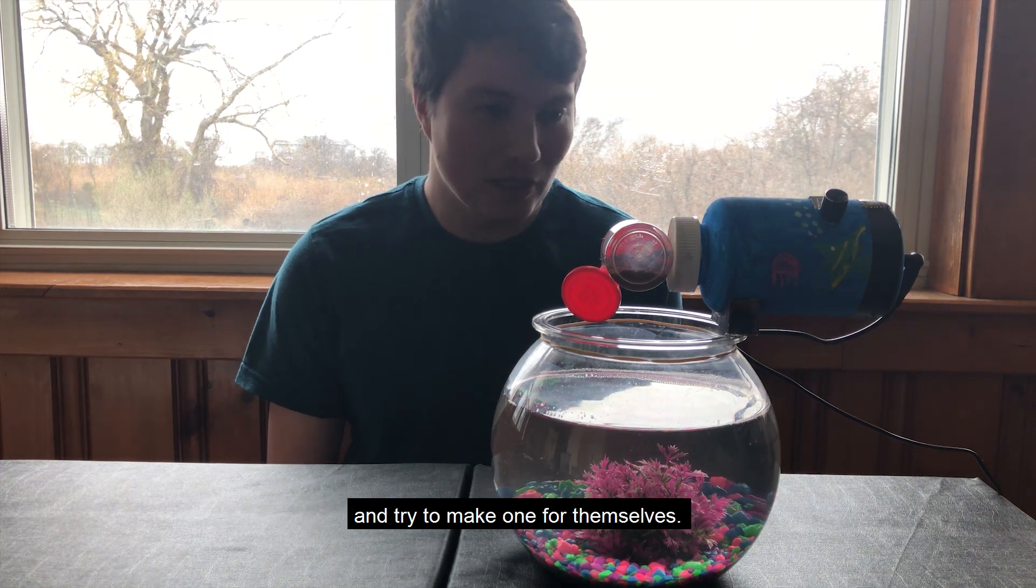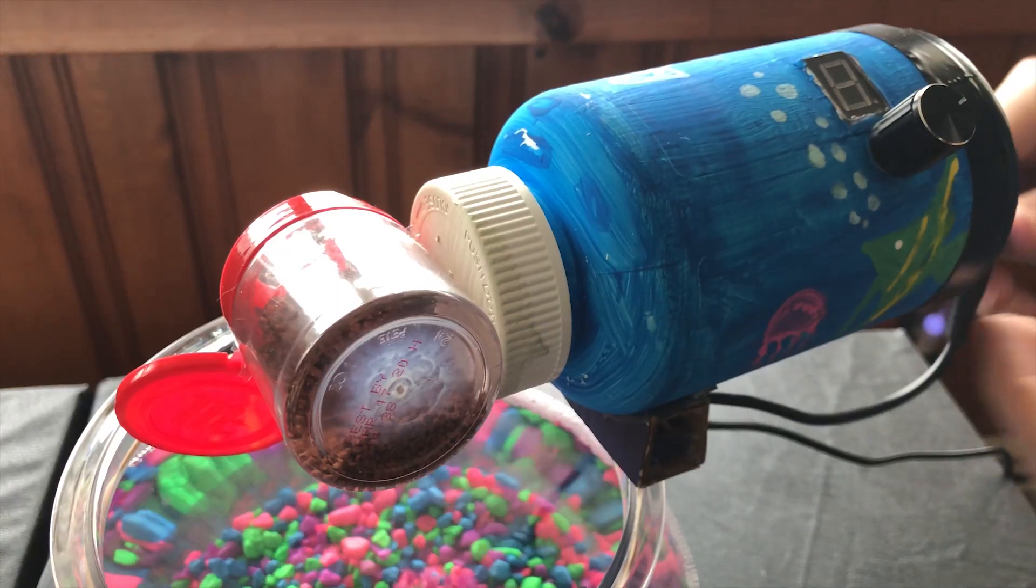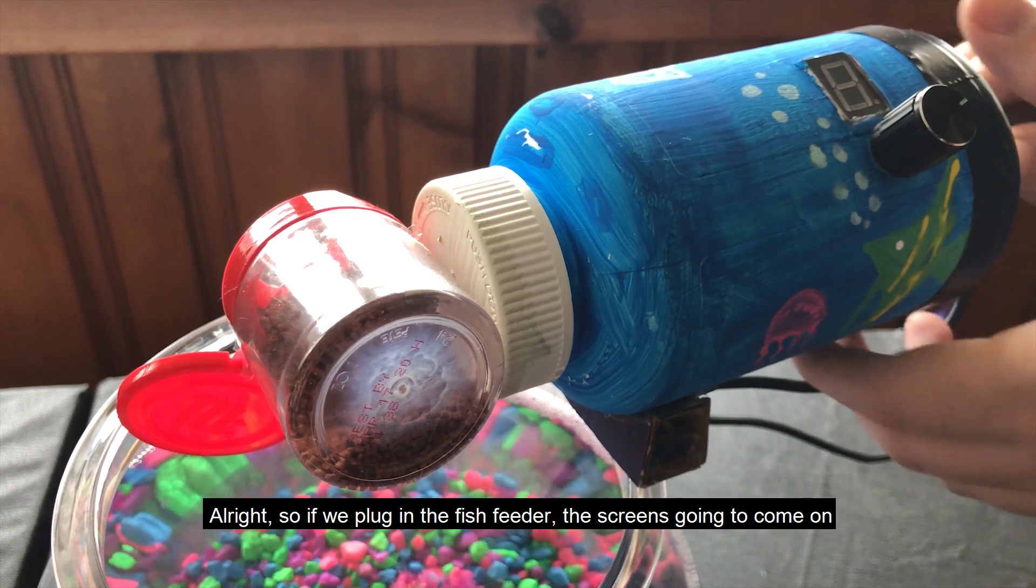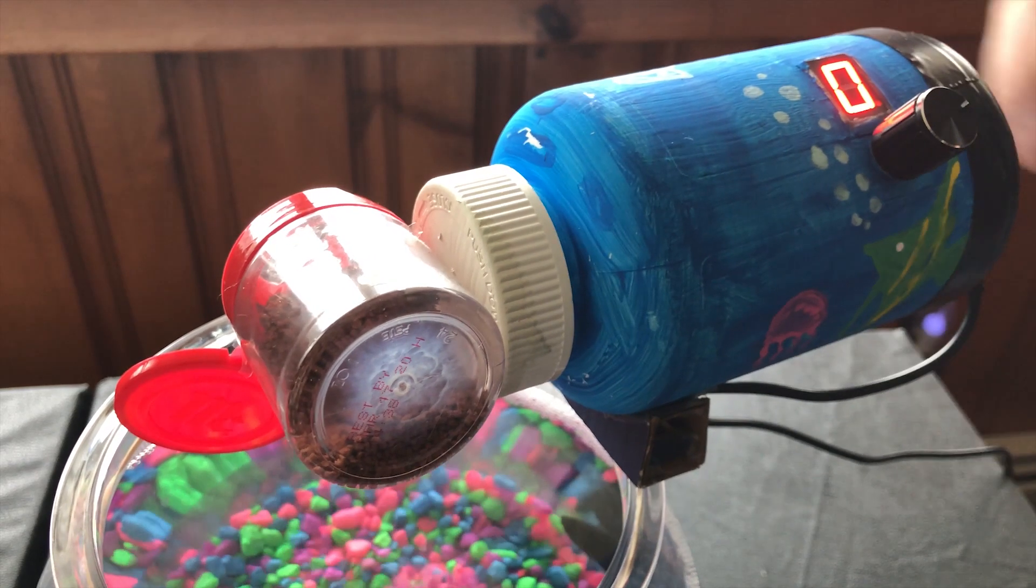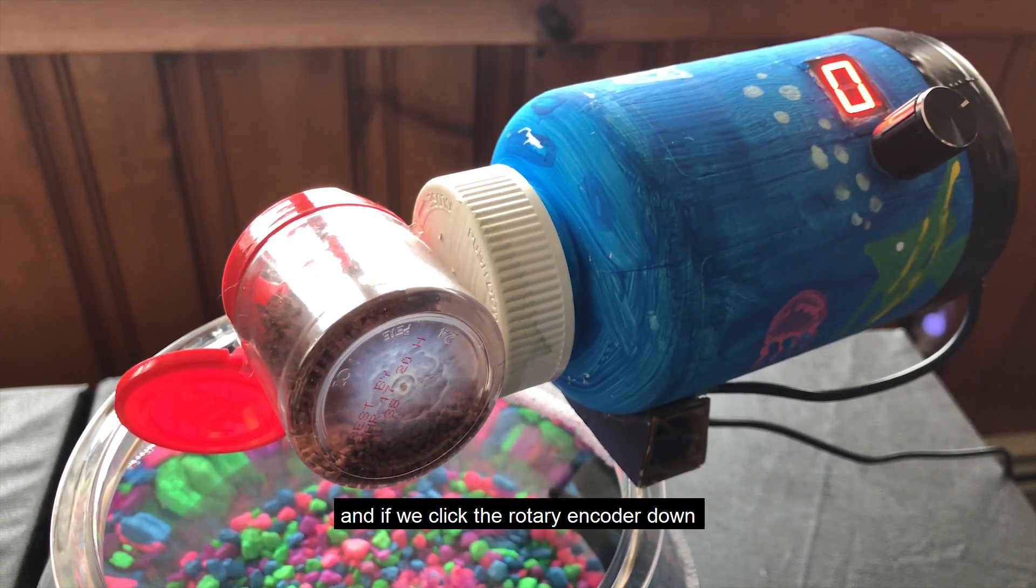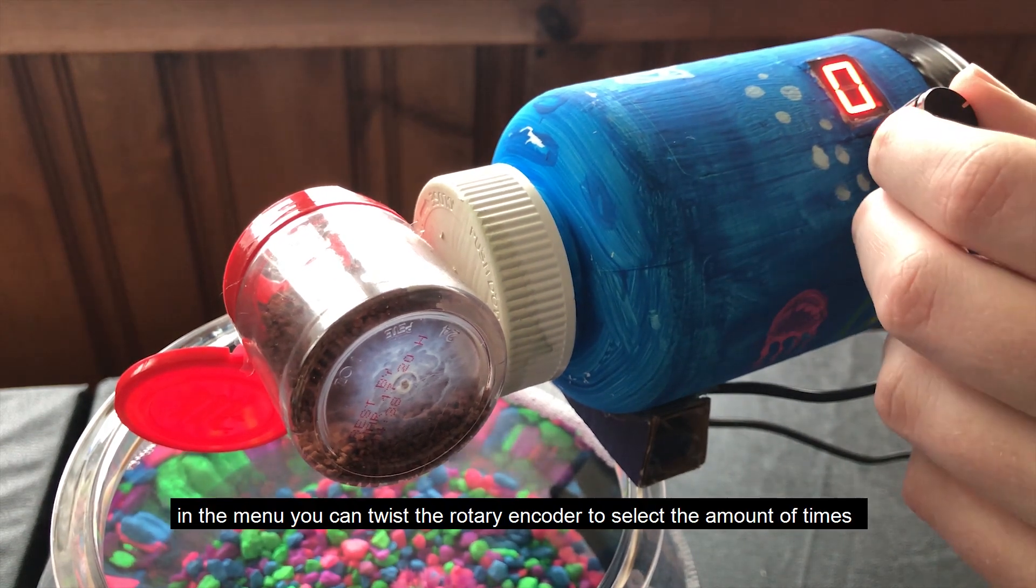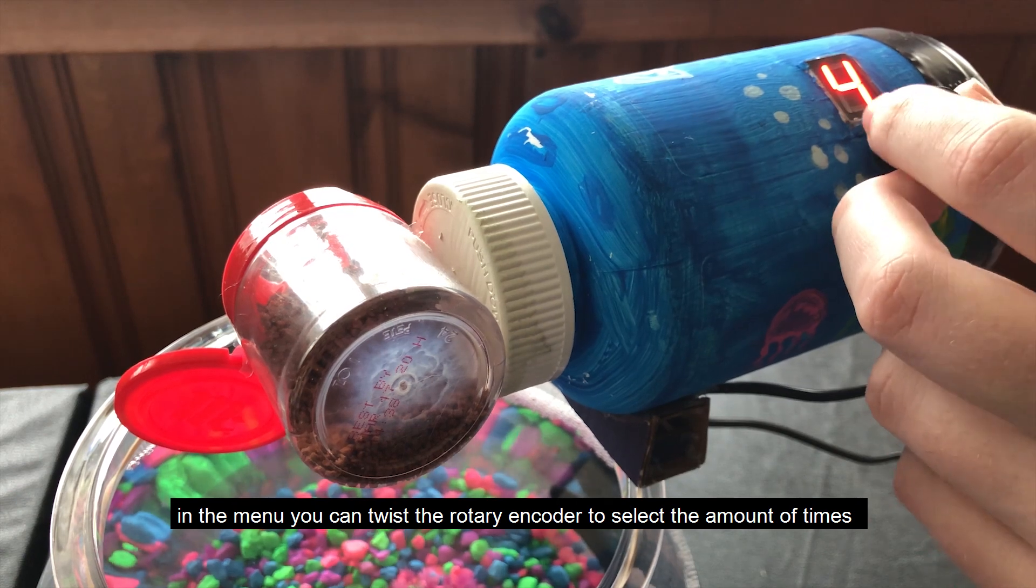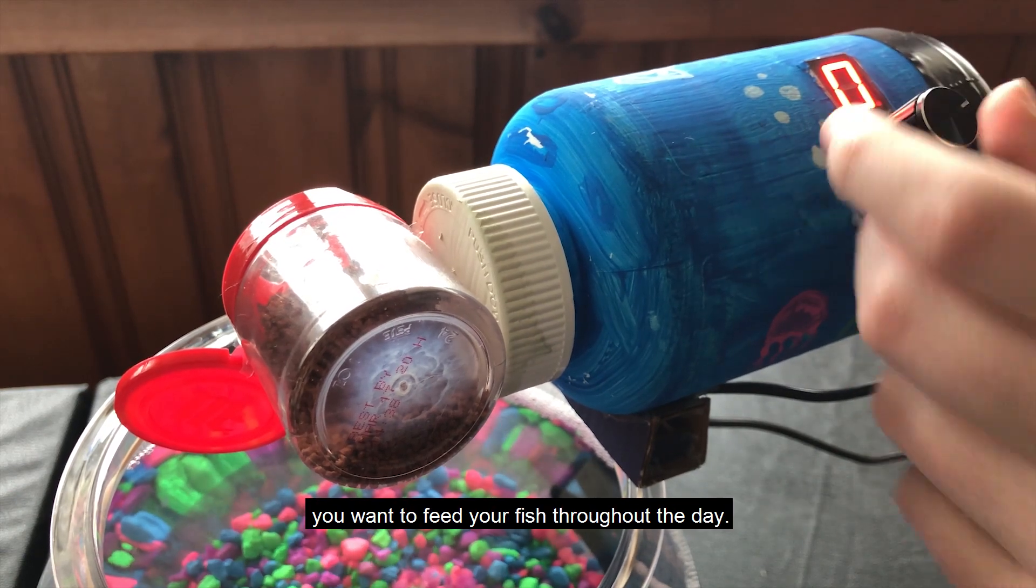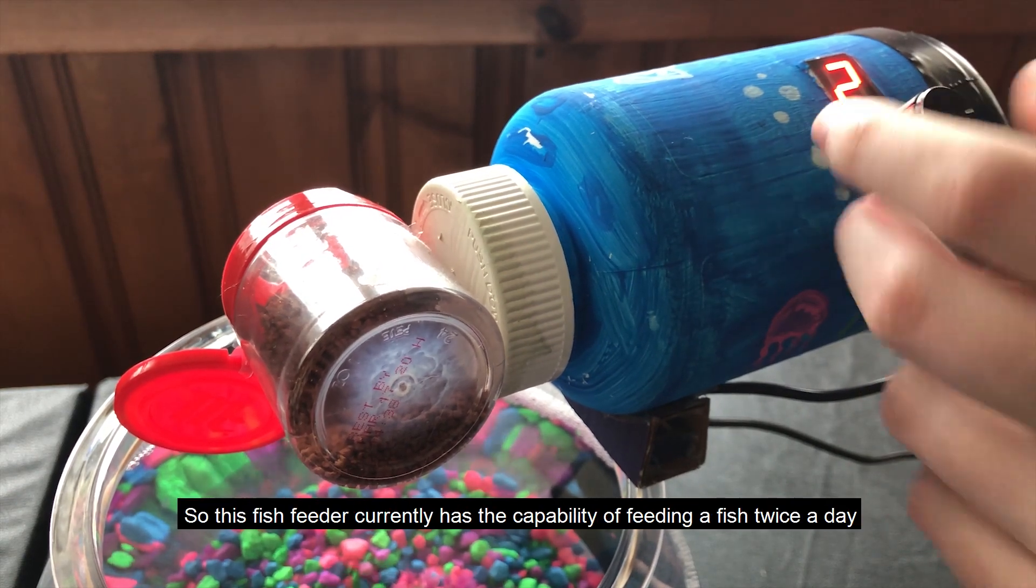If you plug in the fish feeder, the screen is going to come on. If we click the rotary encoder down twice in a second, we're going to enter the menu. In the menu, you can twist the rotary encoder to select the amount of times you want to feed your fish throughout the day. This fish feeder currently has capability of feeding a fish twice a day, four times a day, six times a day, or eight times a day.